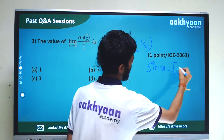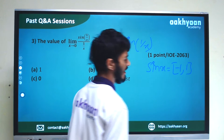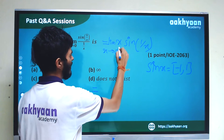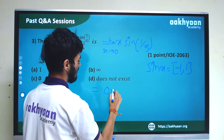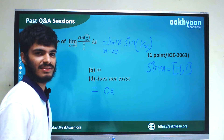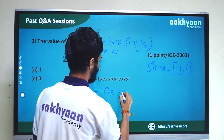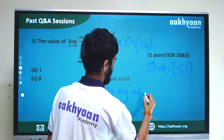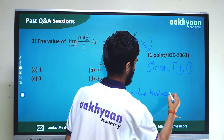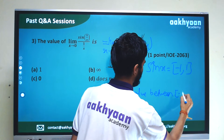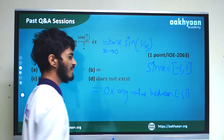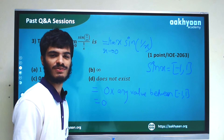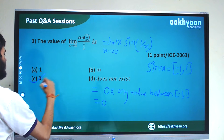Since sin(x) value is always between minus 1 and 1, and x tends to 0, we have 0 multiplied by something between minus 1 and 1, which gives 0. So the correct answer is C.